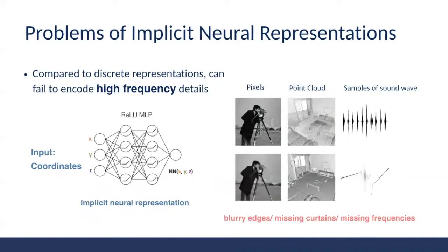Nevertheless, there are still problems with this kind of representation. In particular, most of these implicit neural representations are built on ReLU-based MLPs. Compared to discrete representations, shown in the first row, this kind of representation can fail to encode high frequency details. On the second row, we can see examples of reconstruction results from a ReLU MLP — the edges become blurry, certain details are missing like the curtains, and the frequencies are completely messed up by the network.